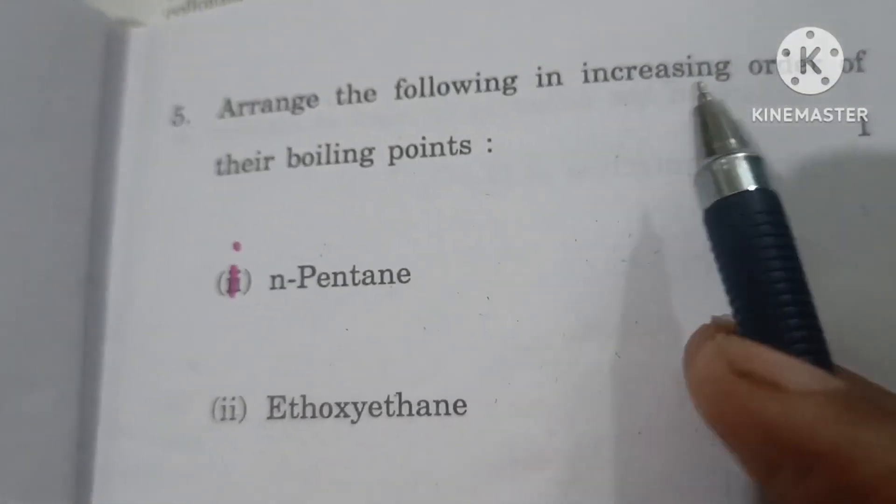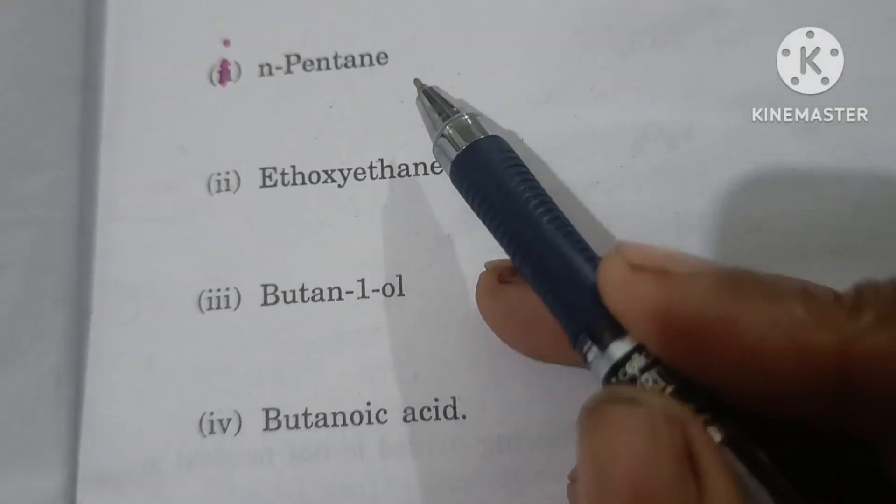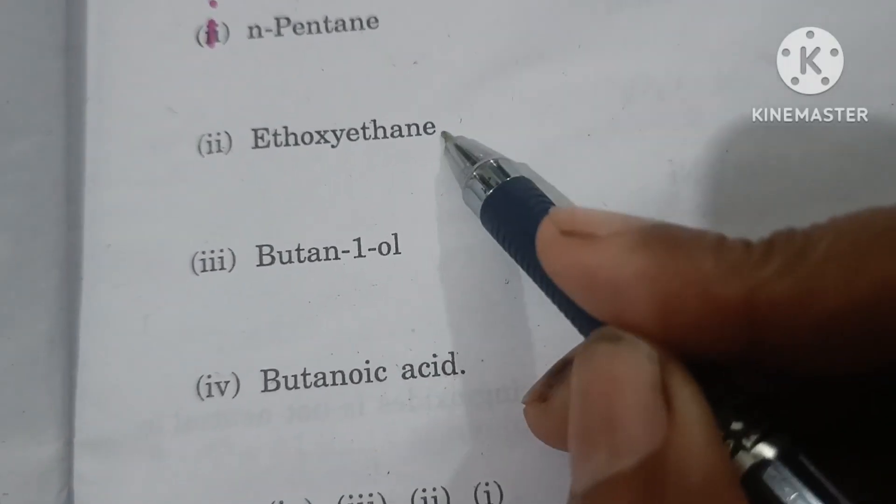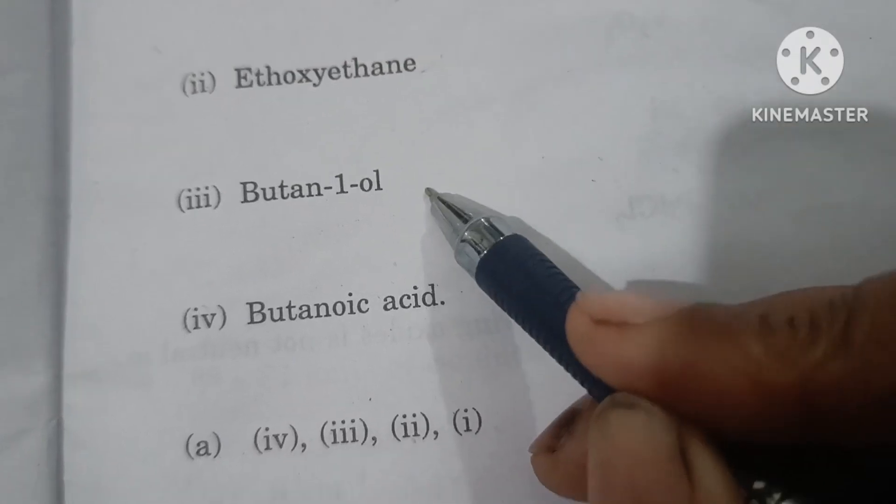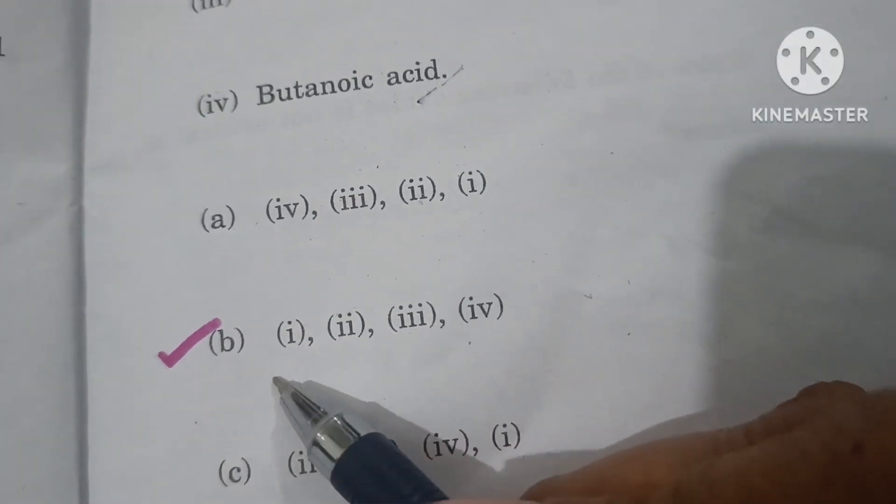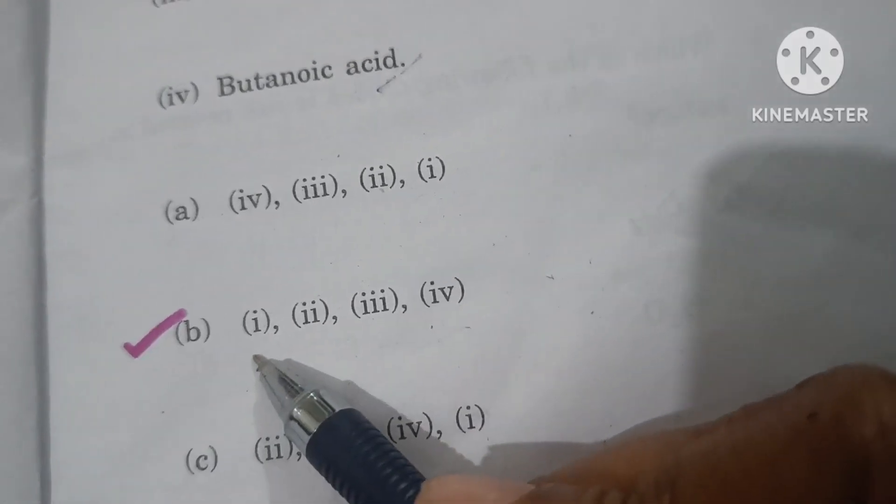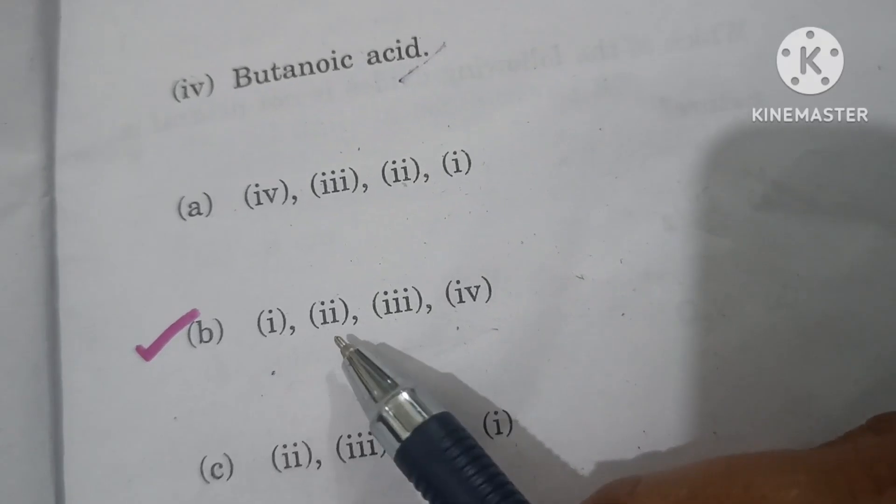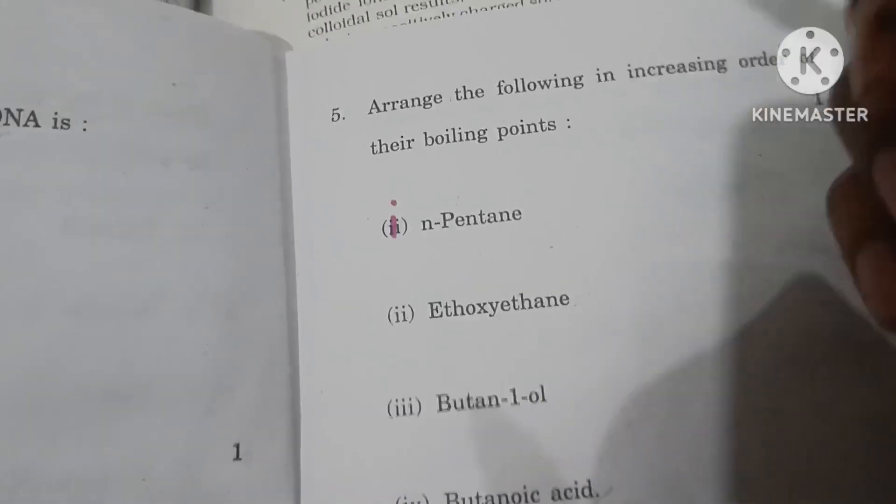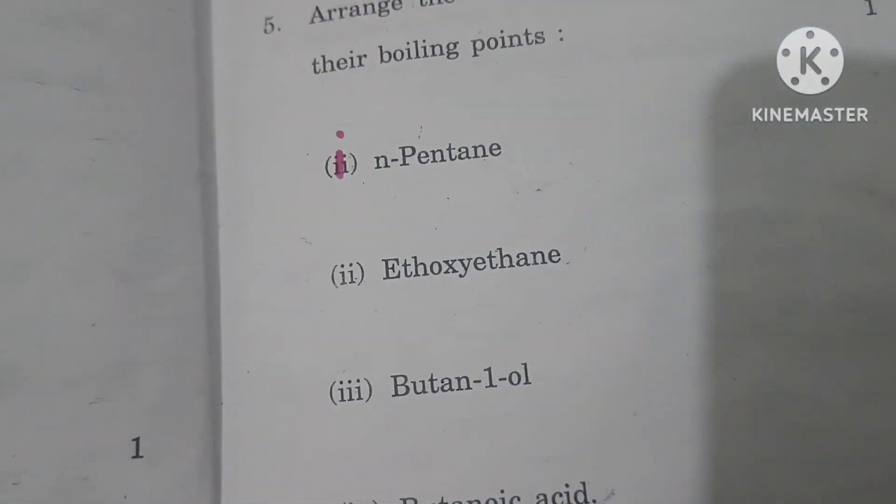Arrange the following in increasing order of their boiling points. Among these, the alkene has the lowest boiling point, then ether, then alcohol, and highest is the acid. So option B has the correct order: 1 has less boiling point than 2, than 3, than 4. There's a typing mistake here; this should be option 2 written, but it's in position number 1.